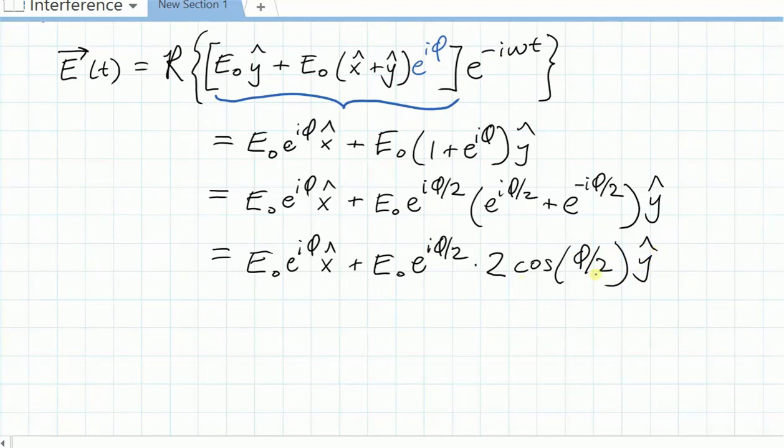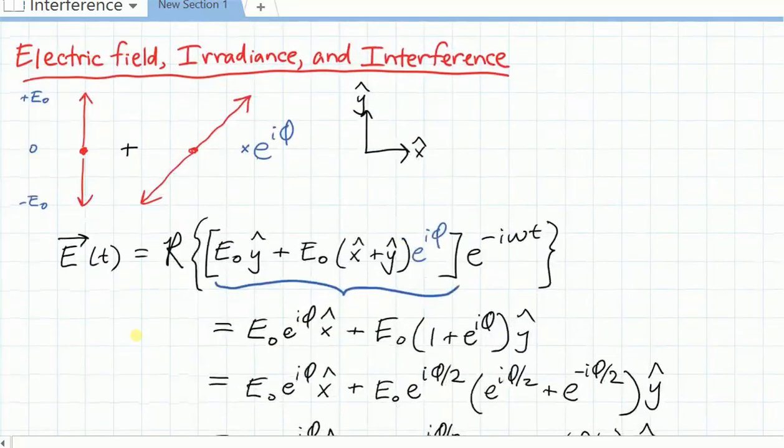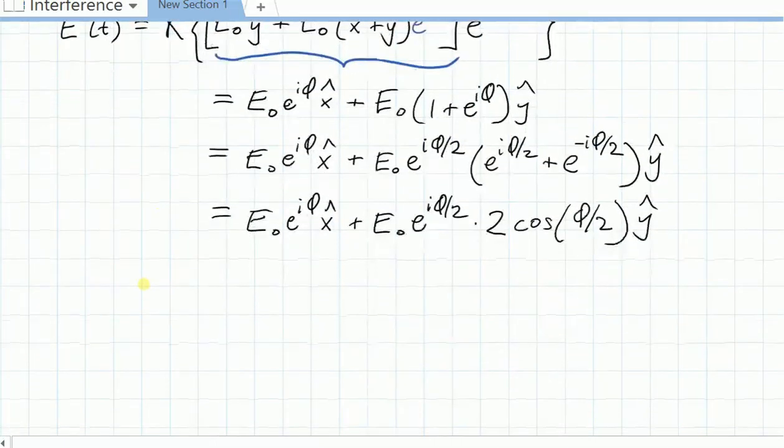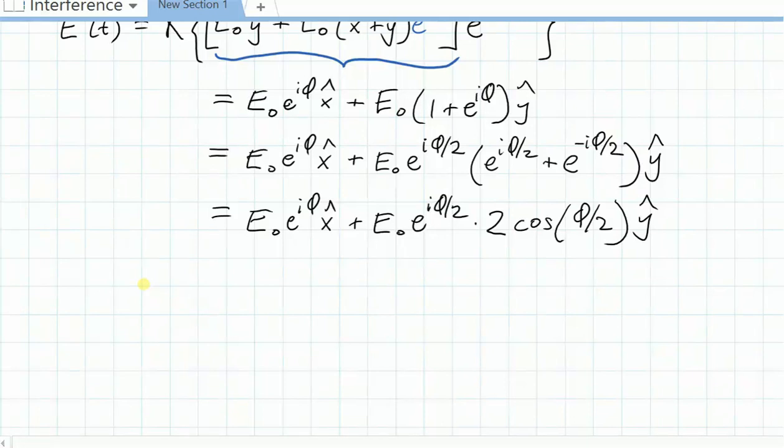And of course, that cosine of phi over 2 is the essential ingredient that comes out of analyzing interference. We've now got some cosine factor, some cosine function of the phase delay between one term and the other. This initial phase delay is now manifesting itself here as this cosine.